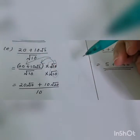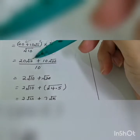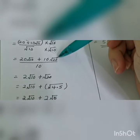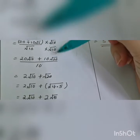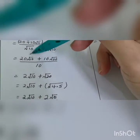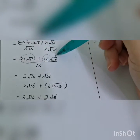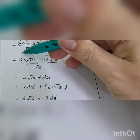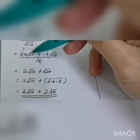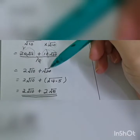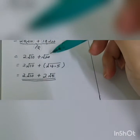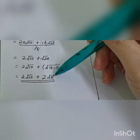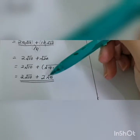Since there are two terms on top, multiply square root of 10 by both. This gives 20 square root of 10 and 10 square root of 20 — because 2 square root of 2 times square root of 10 becomes square root of 20. Simplify: divide 10 and 20 by 10 to get 2 square root of 10 and square root of 20. Simplify square root of 20 as 4 times 5 — square root of 4 is 2, giving 2 square root of 5. There are no like terms, so this is the final answer.